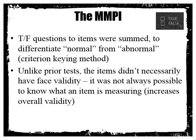The MMPI used the criterion keying method to add up scores for each domain — whether or not the person reported symptoms like depression. Unlike prior tests, the items didn't necessarily have what we call face validity — that's similar to 'eyeball validity,' where when you look at a question item, you know what it's asking. For example, 'I feel sad many times' has face validity for sadness. The MMPI wasn't always obvious about what it was asking.